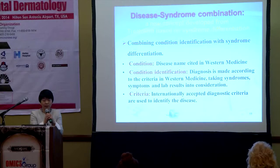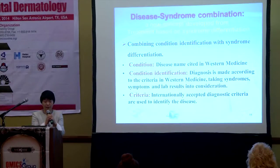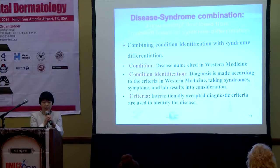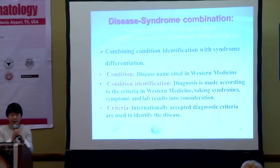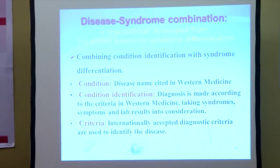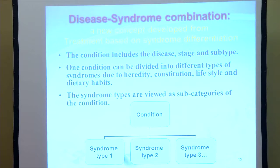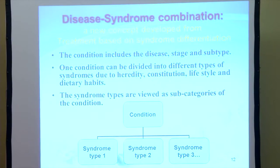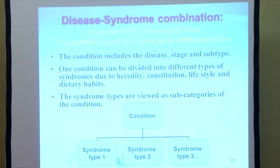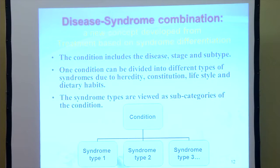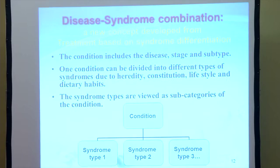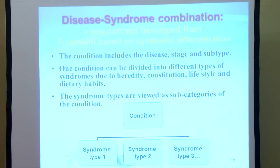In this concept, 'condition' means disease name cited in Western medicine. Condition identification means diagnosis is made according to the criteria in Western medicine, taking symptoms and lab results into consideration. One condition can include the disease stage and subtypes, and one condition can be divided into different types of syndromes due to heredity, constitution, lifestyle and dietary habits. So the syndrome types may be viewed as subcategories of the condition.